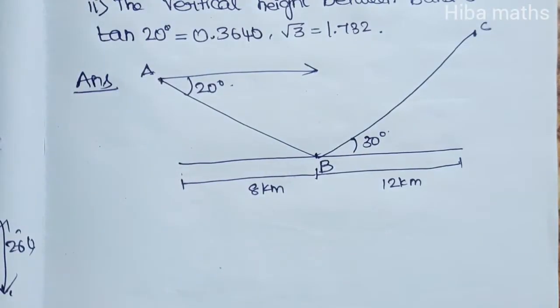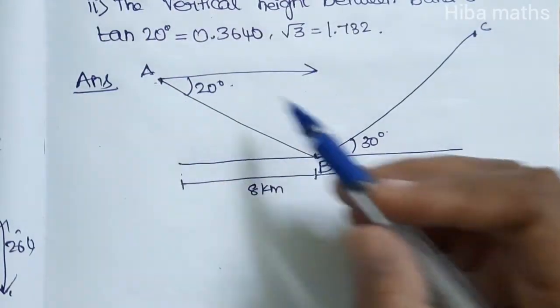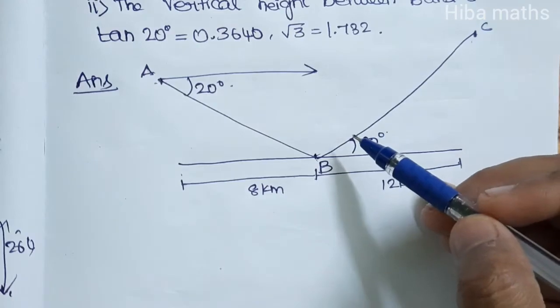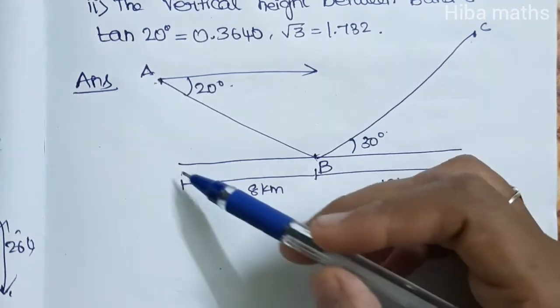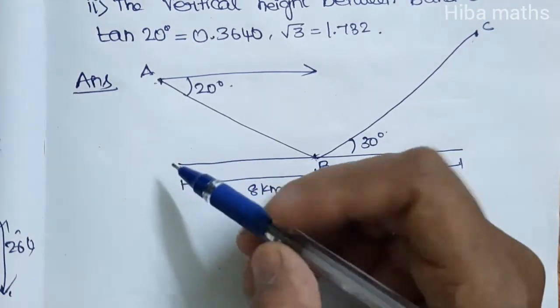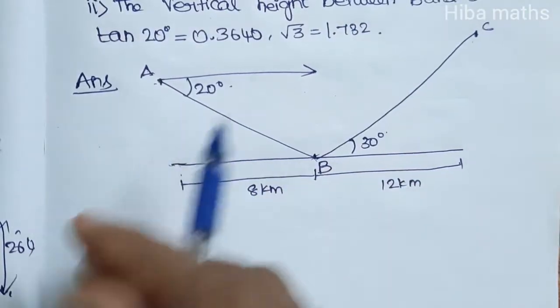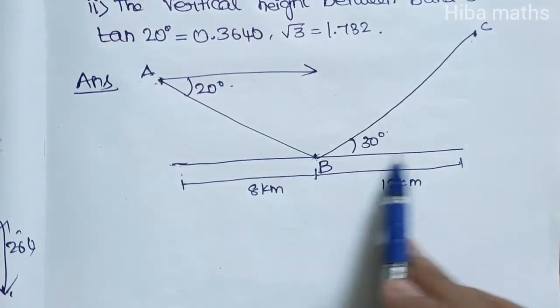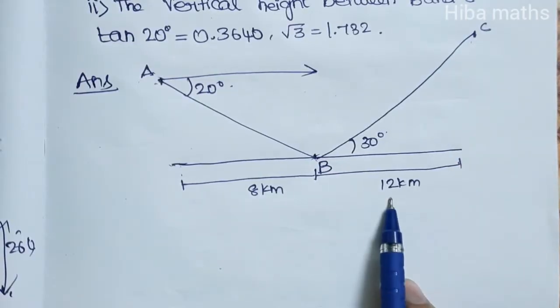The diagram is written in the book. So we have three villages A, B, C. If A is here, the horizontal distance from A to B is 8 km, and from B to C is 12 km.